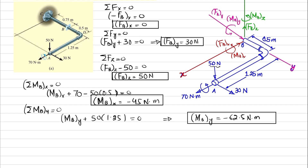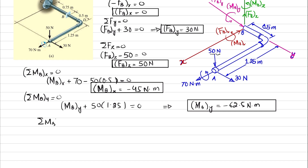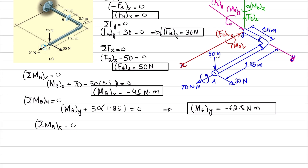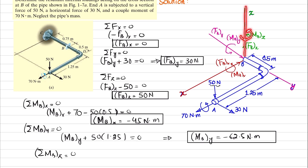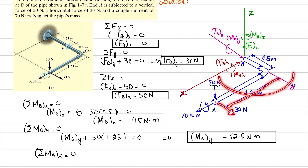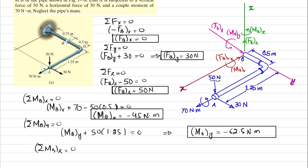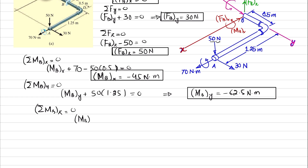The last equation: sum of all moments about point B around Z axis equals zero. About Z, there is MBZ and a moment produced by the 30 Newton force times perpendicular distance 1.25 m, also producing counterclockwise moment. So MBZ plus 30 times 1.25 equals zero. Solving, the moment MB about Z equals minus 37.5 Newton·meter.